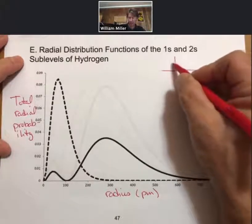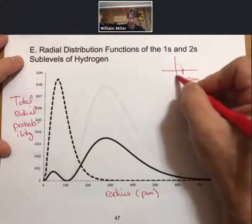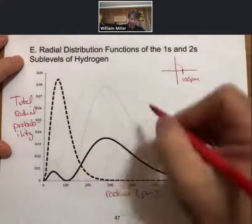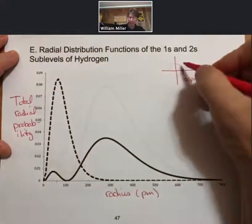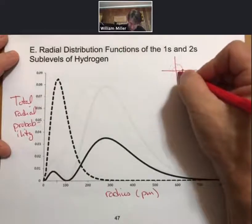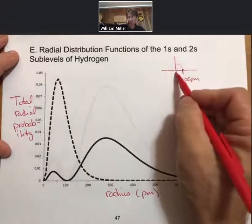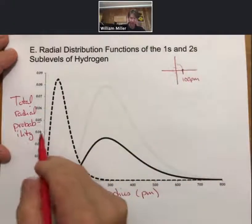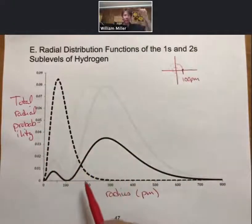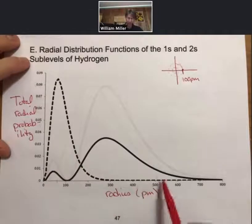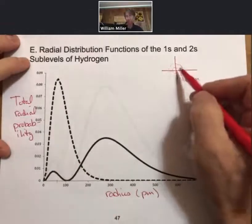And if we go to 52.9, you get up to a little over 8%. So we're going closer to nucleus. At 52.9 you might be 8% likely to find it. So total radial probability means at all of the radiuses around the nucleus, so it's trying to take and make one graph out of what's really a sphere.